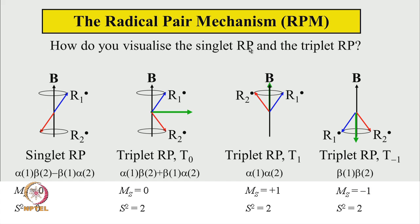How do we visualize the singlet and triplet radical pairs? In a magnetic field of the EPR spectrometer, the spins of radical 1 and radical 2 are precessing. For a singlet radical pair, the wave function is (α₁β₂ − β₁α₂), with net mₛ = 0 and net m² = 0. The two spin vectors point in exactly opposite directions along the magnetic field, so there is no net z-component. This is the singlet radical pair.